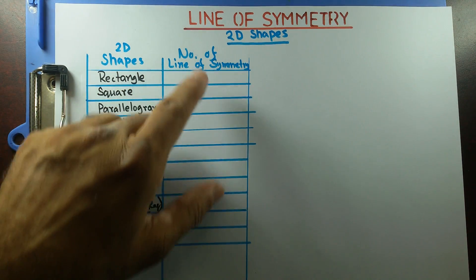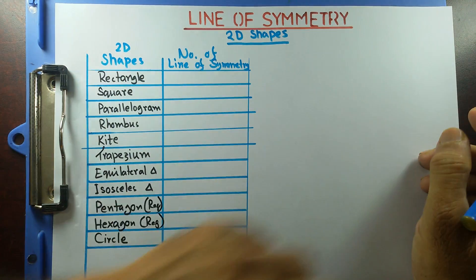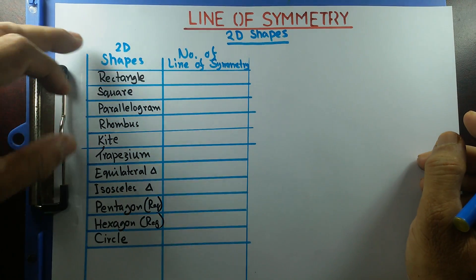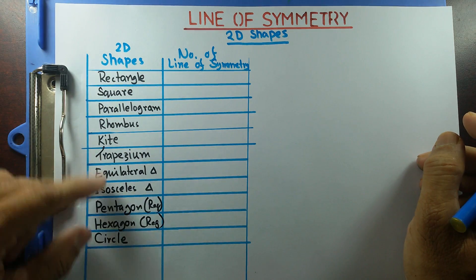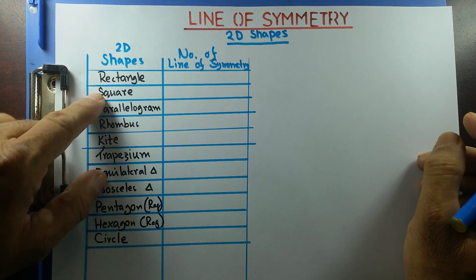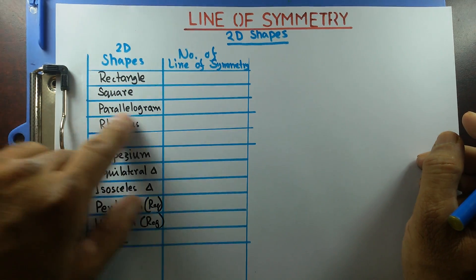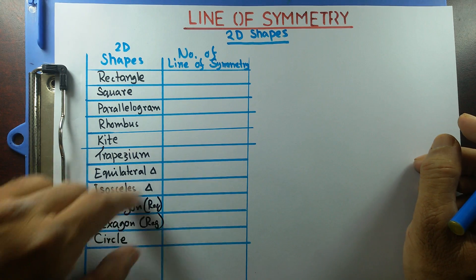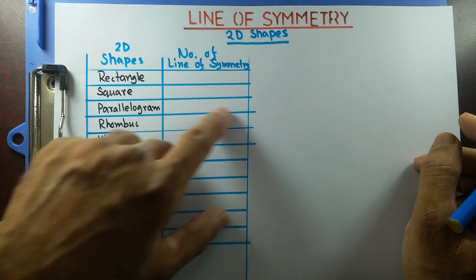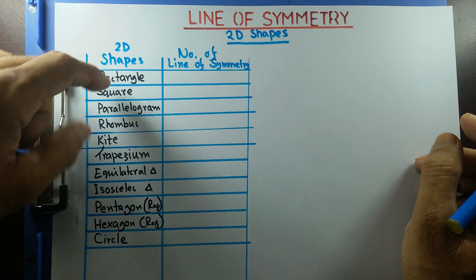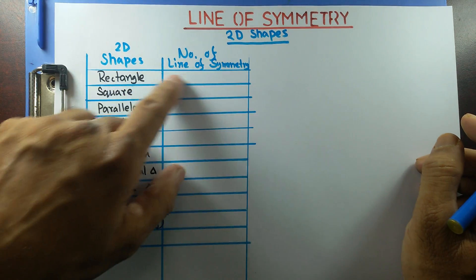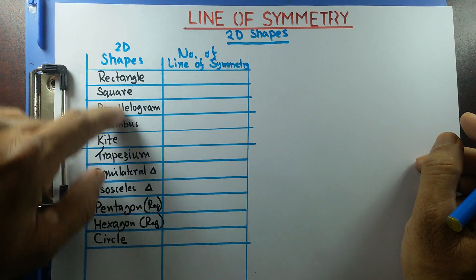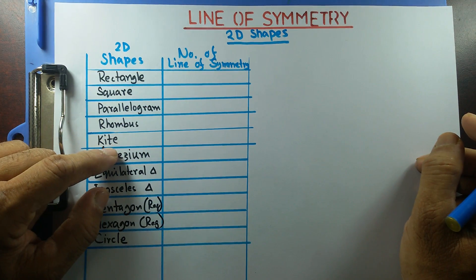Good morning, students. On today's lecture, I'll cover line symmetry of 2D shapes. You can see I have a list of 2D shapes: rectangular squares, parallelogram like this, up to a circle. We are going to find out, in each case, how many lines of symmetry these shapes may have.